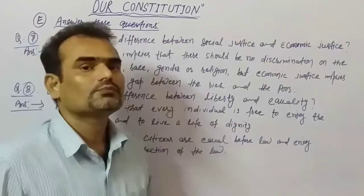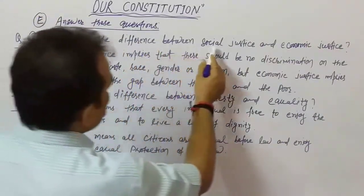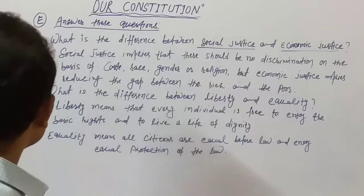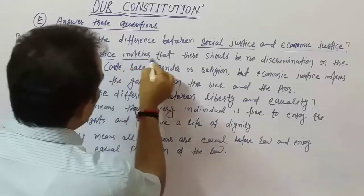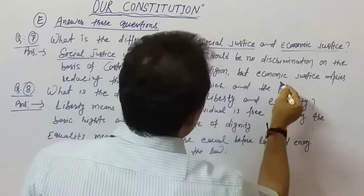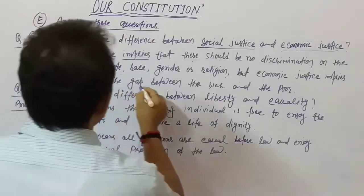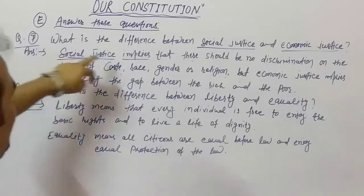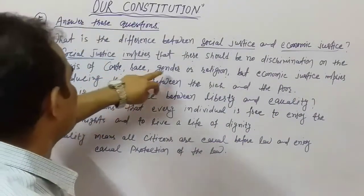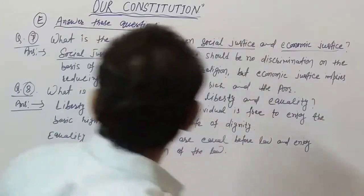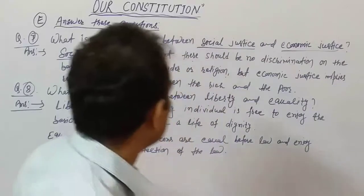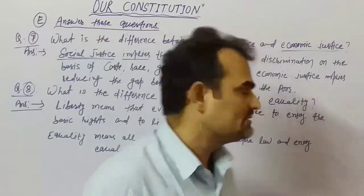Question 7: What is the difference between social justice and economic justice? Social justice implies that there should be no discrimination on the basis of caste, race, gender, or religion. But economic justice implies reducing the gap between the rich and the poor.